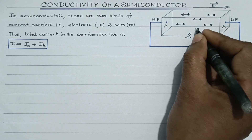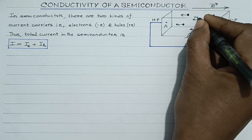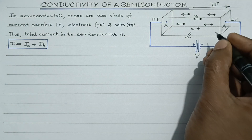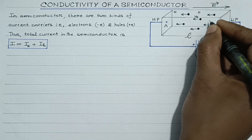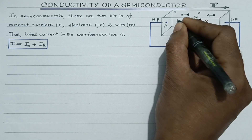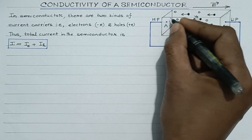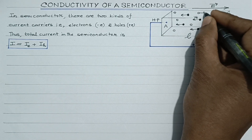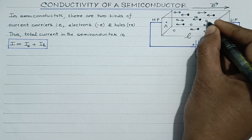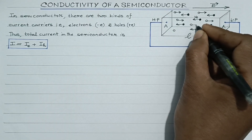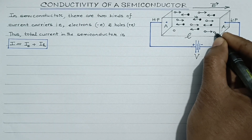And suppose yeh jo free electrons hain semiconductor ke andar, inki jo drift speed hai, woh Ve se represent kar raha hoon. Aur, jo holes hote hain, woh aapko pata hi hai positive charge carriers hain — toh unko is tarike se represent kar raha hoon. Toh, holes being positive charge carriers, will move from higher potential to lower potential, along the direction of the field — toh yeh holes ki direction hogi. Toh dono charge carriers opposite direction mein move kar rahe hain. Holes ki jo drift speed hai, woh VH maan liya.